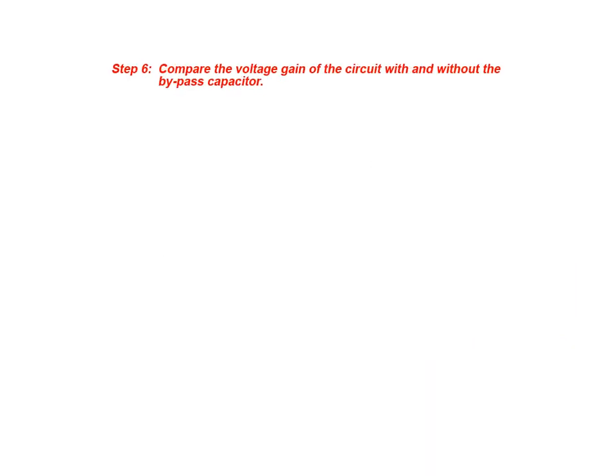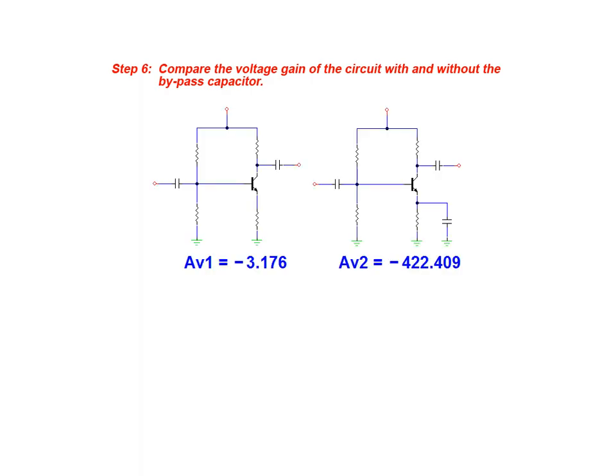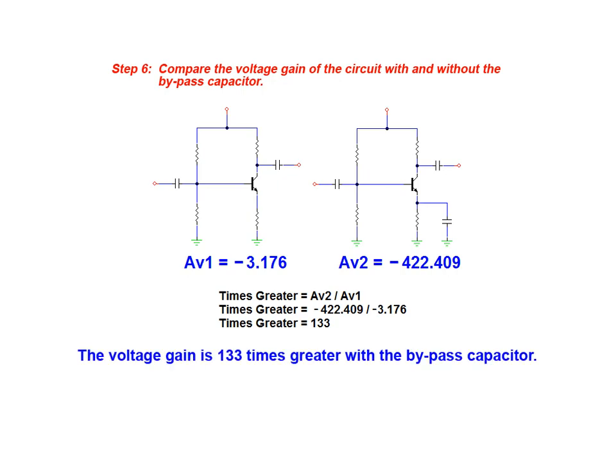We are now ready to move on to the last step in our solution and compare the voltage gain of the circuit with and without the bypass capacitor. This is accomplished by evaluating the ratio of the two individual voltage gains. As can be seen by the result of this calculation the voltage gain is 133 times greater with the bypass capacitor in place.